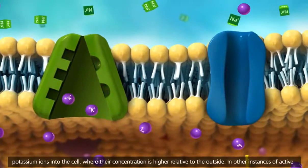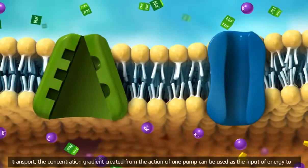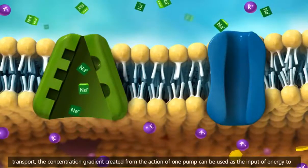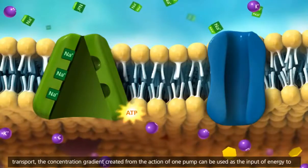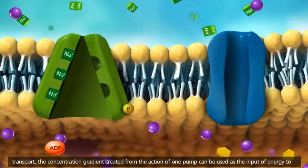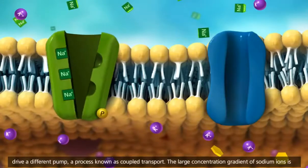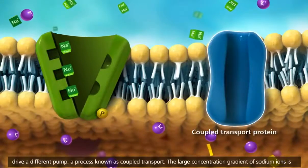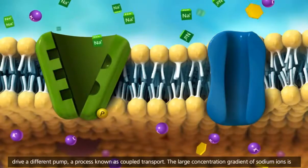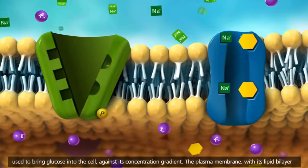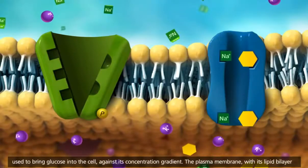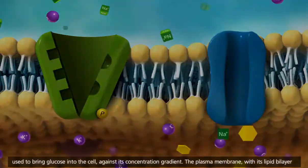In other instances of active transport, the concentration gradient created from the action of one pump can be used as the input of energy to drive a different pump, a process known as coupled transport. The large concentration gradient of sodium ions is used to bring glucose into the cell against its concentration gradient.